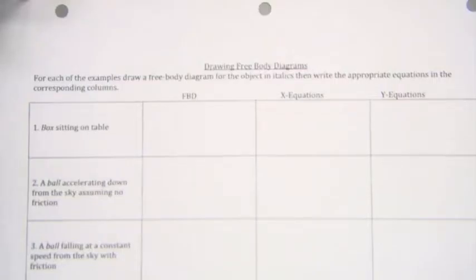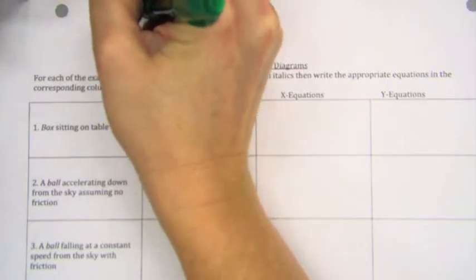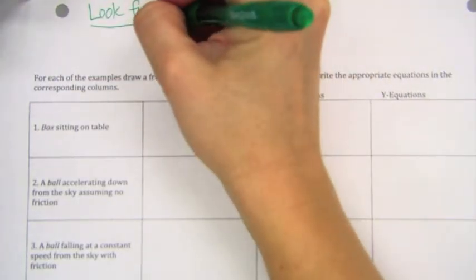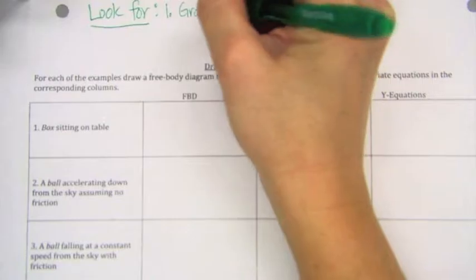All right, now let's just start with basics for free body diagrams. The four forces that you're going to look for every single time you draw a free body diagram. Number one, gravity, which is FG.